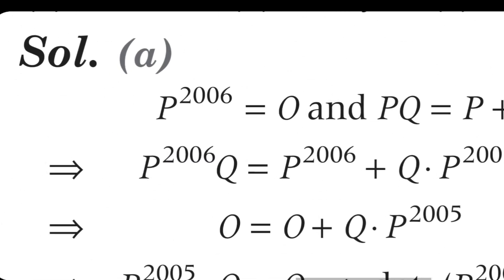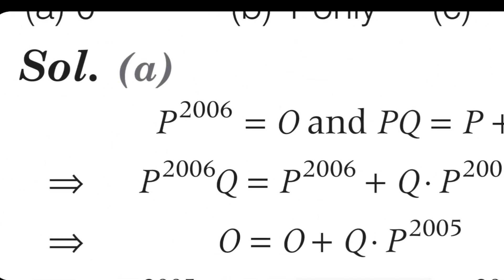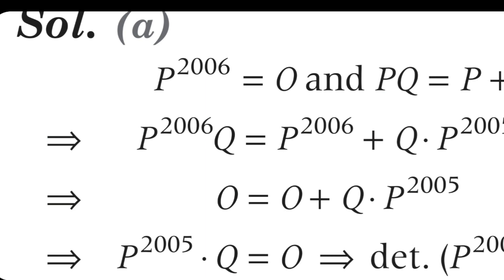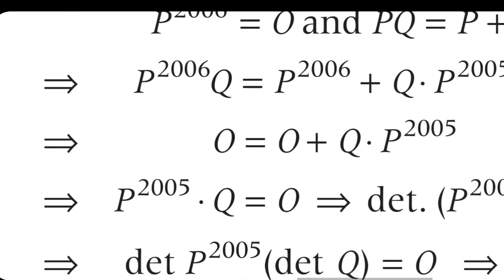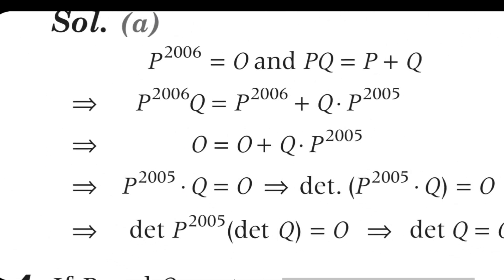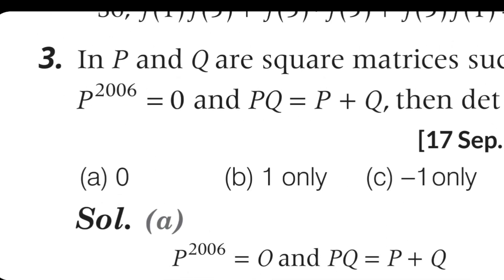So the P value: P to the power 2006 into Q. P of Q gives zero. And Q into the remaining power also gives zero. So simply Q equals zero. Answer is A.